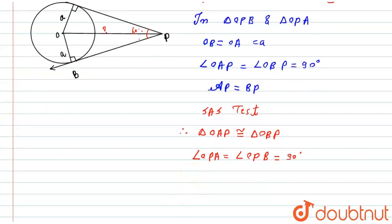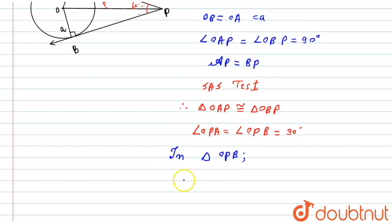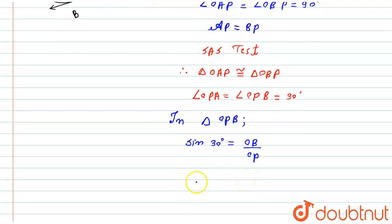To find the length of OP, consider triangle OPB and use the trigonometric property. Sin(30°) = opposite/hypotenuse = OB/OP. Here OB = a and the hypotenuse is OP. So sin(30°) = 1/2 = a/OP.